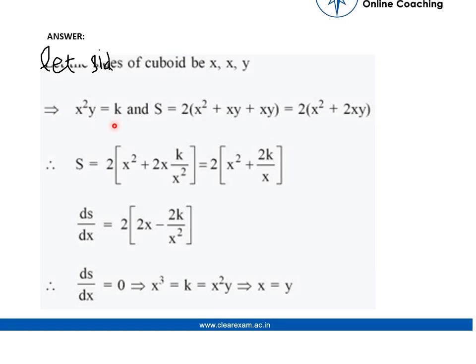So we have kept it as k and now we need to focus on the surface area. So surface area is 2(lb + bh + lh). So we have calculated this.